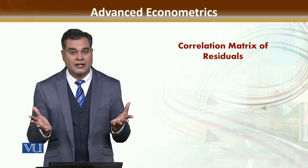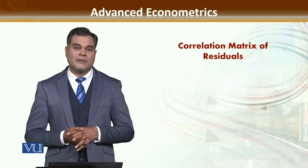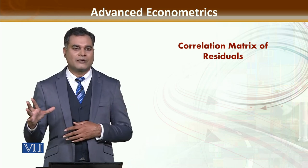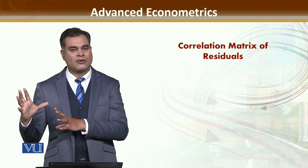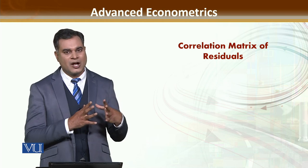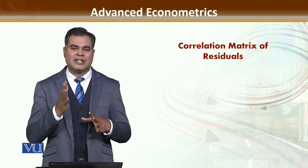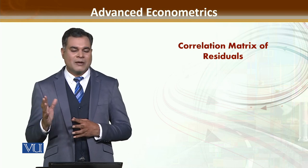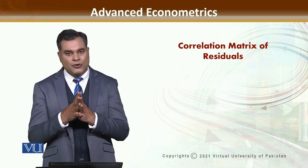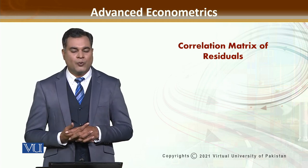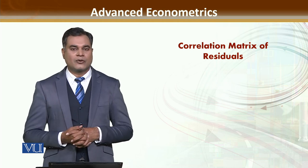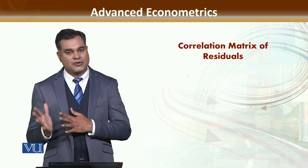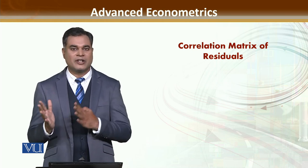If there is weak correlation, then OLS is the best, meaning the errors are not correlating, which aligns with the first assumption we studied. In the correlation matrix, the philosophy is the same: the value of correlation lies from +1 to -1. Closer to +1 means there is a positive and strong association. Closer to -1 means strong but negative association — one variable increases, the other decreases. If the value is close to 0, like 0.12 or -0.12, it means correlation exists but is very weak. You must be careful about whether the correlation is strong or weak, positive or negative.